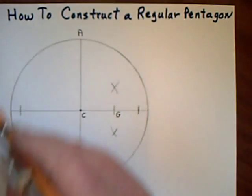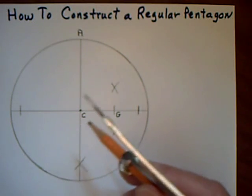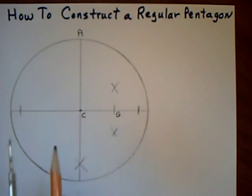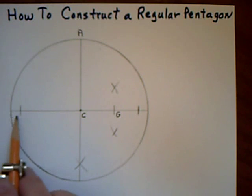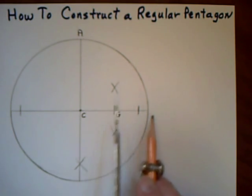I start by drawing any circle with a center C, and I put in any diameter that goes through the center.